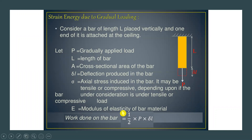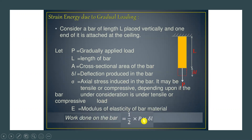Let E be the modulus of elasticity of the bar material. The external work done by load P on the bar is force into displacement. Since it is a gradually increasing force from 0 to P, we take the average force as P/2. So the external work done equals (1/2) × P × dL, where dL is the deformation.